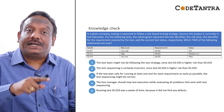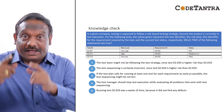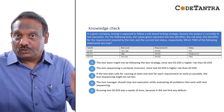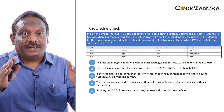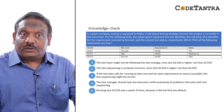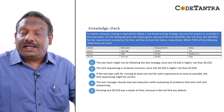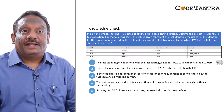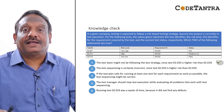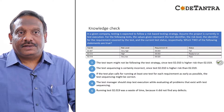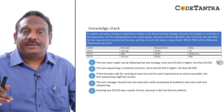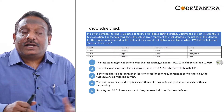Statement one says the test team might not be following the test strategy, since test O2.0100 has a higher risk than O2.019. Looking at the table, that is true — O2.0100 is indeed higher risk than the first one, so the team may not be fully following the test strategy. Statement two says the test sequence is certainly incorrect because O2.0100 is higher risk than O2.019. However, we cannot say it is certainly incorrect.